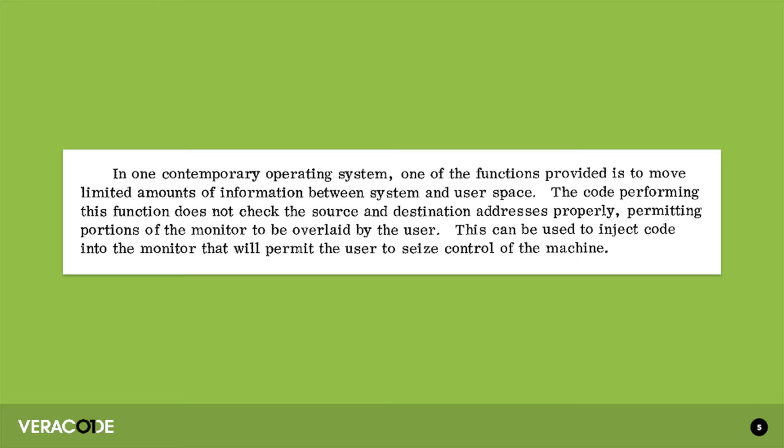You can see here: the code performing a particular function does not check the source and destination addresses properly, and that permits an attacker to inject code which will seize control of the machine. This was in 1972 that we knew about the existence of buffer overflow vulnerabilities in software. And of course we've had a number of different software vulnerabilities since then. There it is, black and white, 1972. You could say that software security has been terrible ever since.